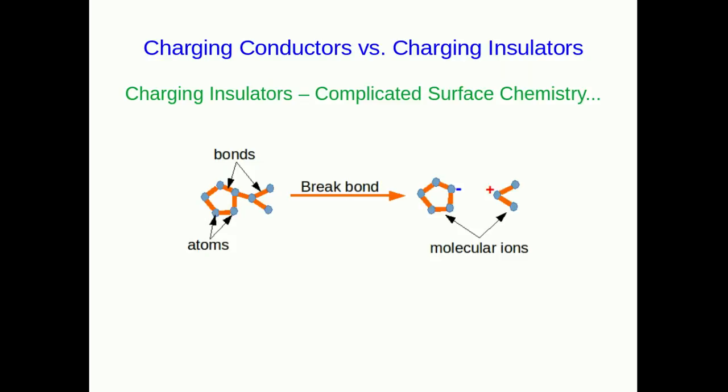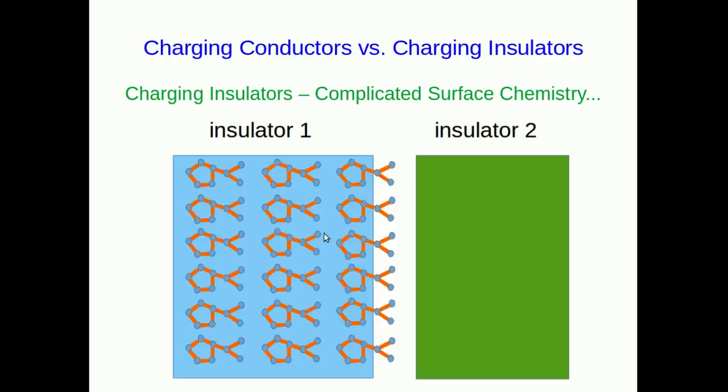So when we are charging insulators, what's going on is that the insulator is typically made out of molecules. So here's some molecule made out of atoms with bonds connecting them. If you break a bond in the molecule, often it'll break up in such a way that you get two fragments, and often the charge will be unevenly distributed between them, so that one of these fragments is negatively charged and the other is positively charged. You call these molecular ions. Now, if you have two materials, so here's insulator 1 and insulator 2, and I've drawn insulator 1 as being made out of the molecules I was just showing you. Insulator 2, of course, is also made out of molecules, but I'm not bothering to show you them because there's nothing going to happen with them.